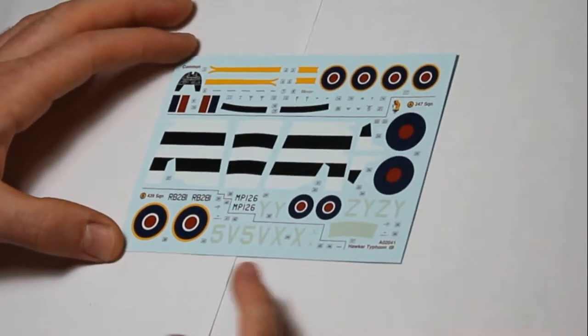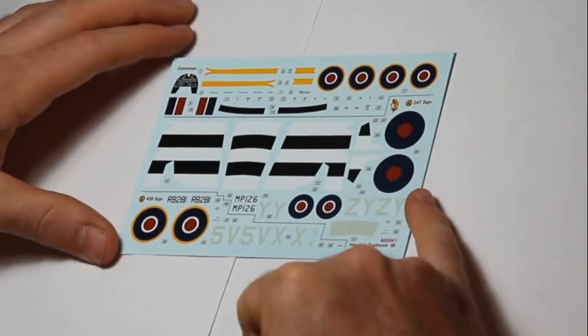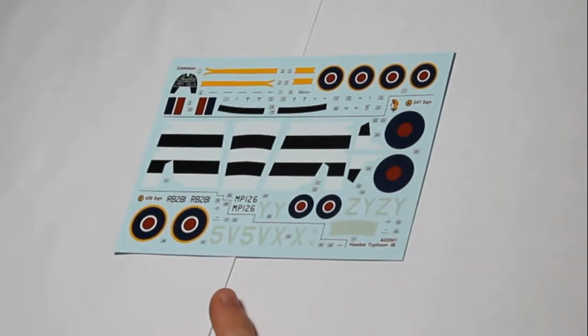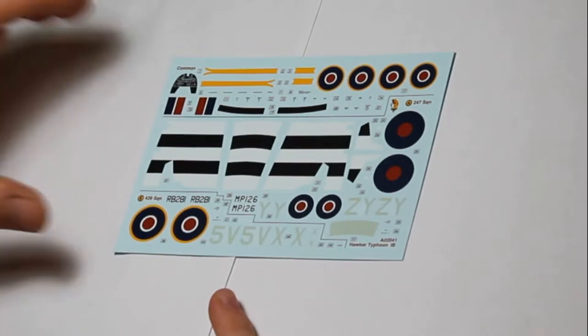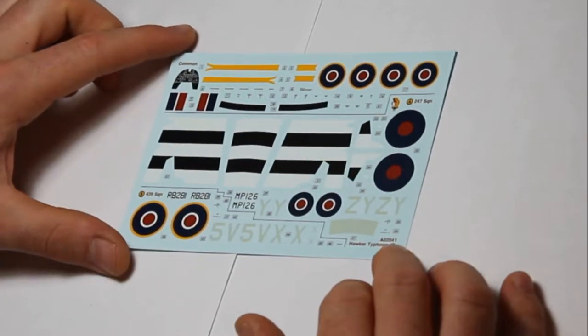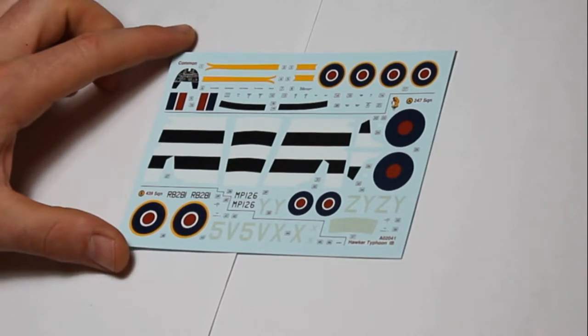And then we go to the sections, so you've got the A section, which has got the D-Day markings, and then you've got the B version, which doesn't have D-Day markings. So that's quite useful. It's nice to have them included. I haven't seen that before by Airfix.